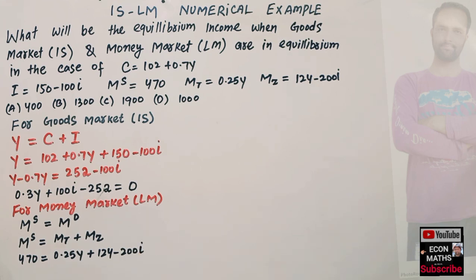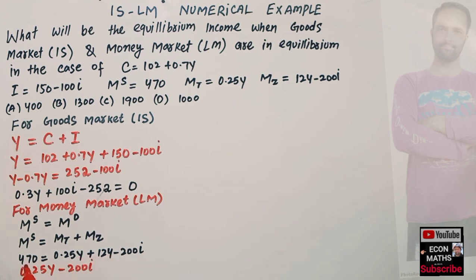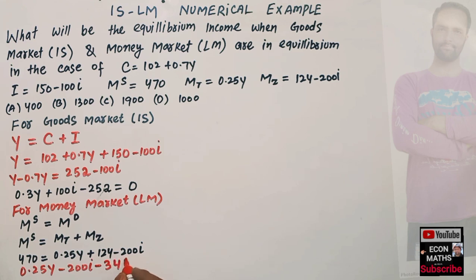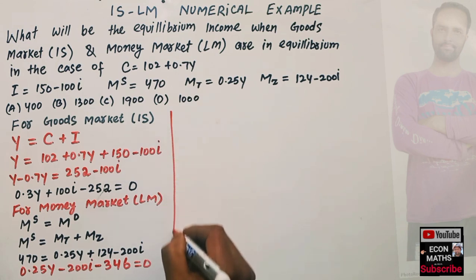Solving the money market equation: 0.25Y - 200i + 124 - 470 = 0, which simplifies to 0.25Y - 200i - 346 = 0. This is our LM function.